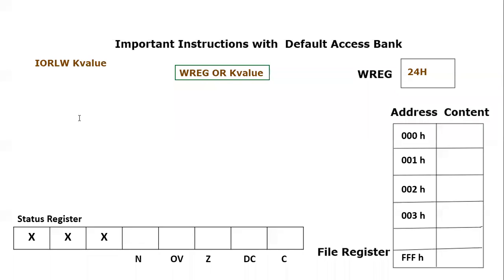Let's take an example. Let's consider we have a value of the working register as 0x24, and we are using the instruction IORLW, which is inclusive OR literal working. We are performing an OR operation between 0xFE. You can also write it as 0FE, which is another way to write hexadecimal numbers.